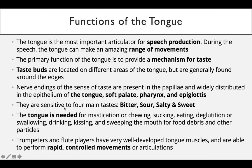Trumpeters and flute players have very well-developed tongue muscles and are able to perform rapid, controlled movements or articulations. Articulations refer to rapid, controlled, and distinct movements of the tongue.